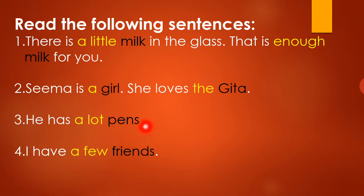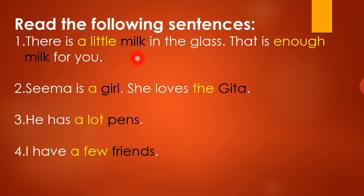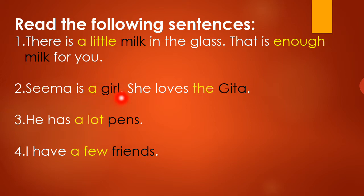These all are Nouns, written in black. And the words used before these Nouns — written in yellow — are indicating towards the Nouns, telling us something about them. Like this word is telling us 'a little' — it means a little bit. Seema is a girl. If we do not use 'a', the sentence loses sense. But if we add 'a', it indicates the coming Noun. So 'a' before 'girl' tells us it's one girl.